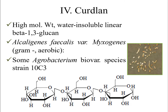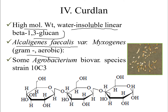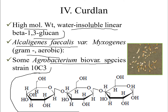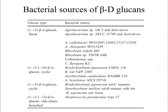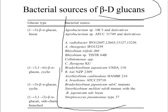Another EPS is curdlan, a high molecular weight, water-insoluble linear beta-1,3-glucan compound. It is biosynthesized by Alcaligenes faecalis var. myxogenes and some Agrobacterium biovar species strain 10C3 — both gram-negative aerobic bacteria. Bacterial sources of beta-D-glucans include Agrobacterium, Rhizobium, Cellulomonas, Agrobacterium, and Streptococcus pneumoniae, which contribute to curdlan formation.